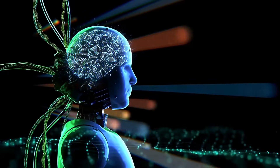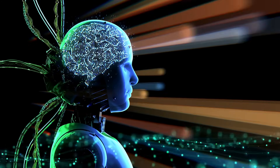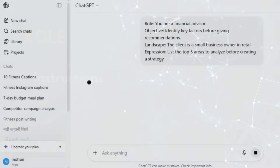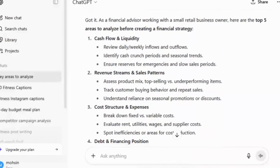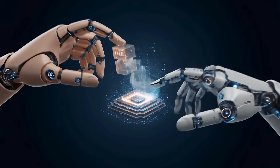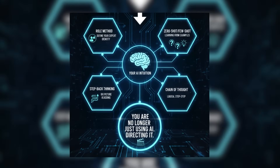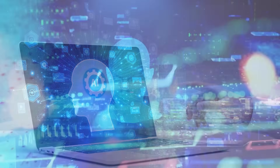Finally, chain of thought — this is where we literally tell the AI 'let's think step by step.' By adding that little instruction inside our role prompt, the AI actually slows down and reasons through its answer instead of jumping to conclusions. It's especially useful for logical or multi-step problems. So when you combine the ROLE method with these techniques — zero-shot, few-shot, step back, and chain of thought — you're no longer just using AI. You're actually directing it.